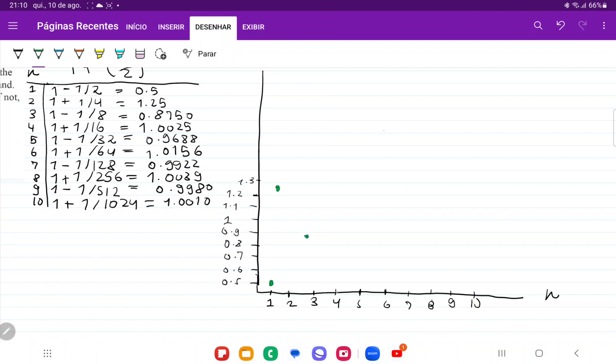For a is equal to 4, we have 1.0625. So very, very close to 1, maybe just a little bit above. a is equal to 5, we have 0.96. So about here.